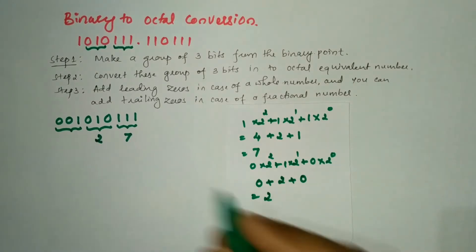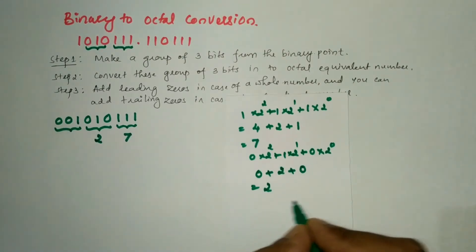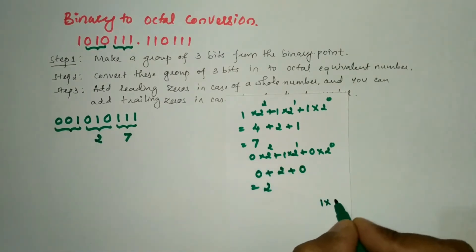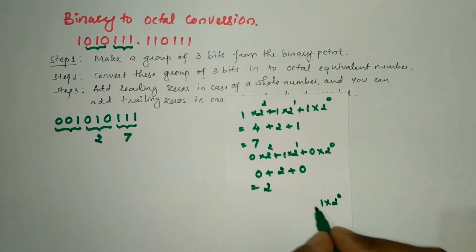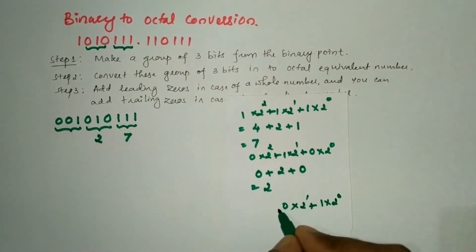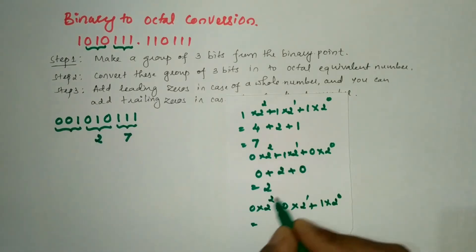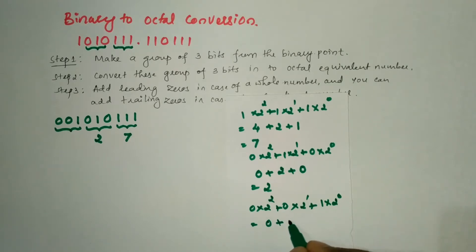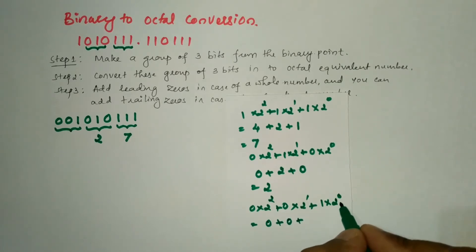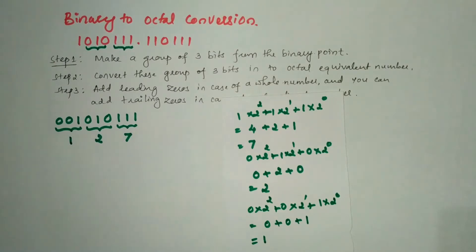Now for the group 0, 0, 1: the positional weight of the 1 is 2 to the power 0, plus 2 to the power 1 into 0, plus 2 to the power 2 into 0. So 1 + 0 + 0 = 1. This group 0, 0, 1 gives us the value 1.